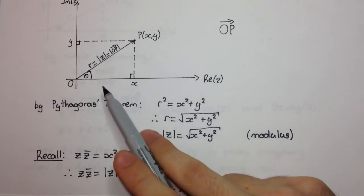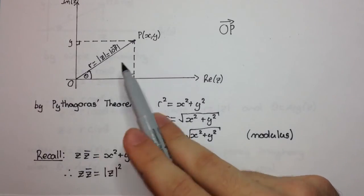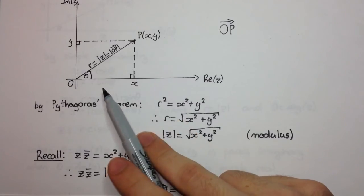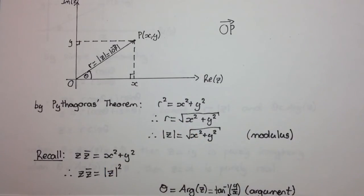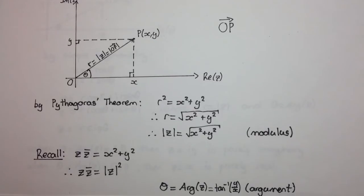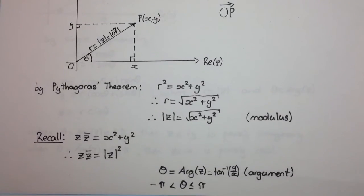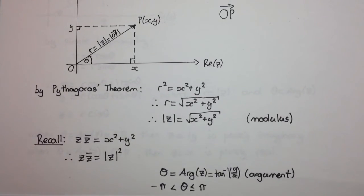Right, and that just comes from considering tan of theta, which would be the opposite over the adjacent, so y over x, and so theta is the inverse tan of that. We call that the argument. And the principle argument, which we define as minus pi is less than theta, is less than or equal to pi.